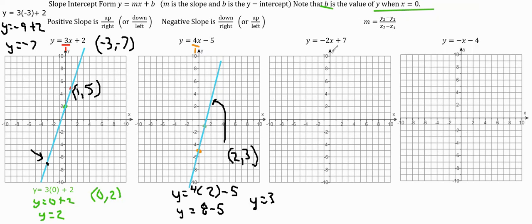For the next equation, y equals negative 2x plus 7, we start at the y-intercept, which is positive 7. We go up 7 and put a dot there. Our slope is negative 2, which is the same as negative 2 over 1. This is negative slope, so we go down 2 and right 1 from the first dot, giving us a point at 1, 5. Then we draw a straight line.